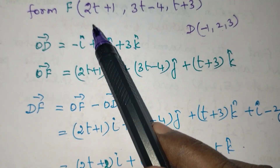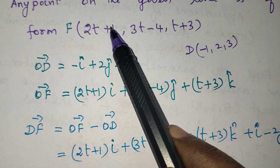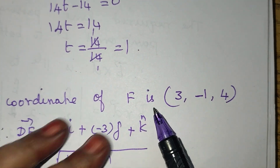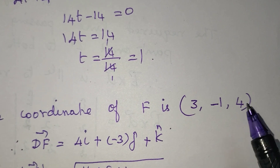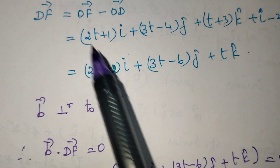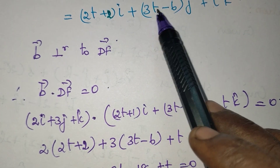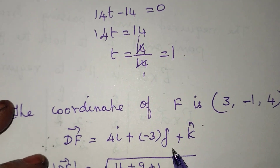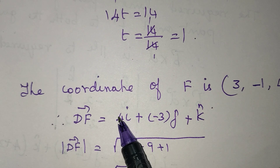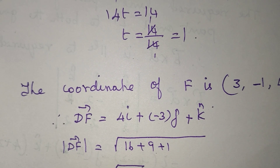t = 1. Substituting t = 1, the foot F coordinates are (3, -1, 4). Therefore the DF vector equals 4i - 3j + k. The shortest distance is the modulus of DF vector: square root of (4² + 3² + 1²) = square root of (16 + 9 + 1) = √26. This is the answer. Thank you.